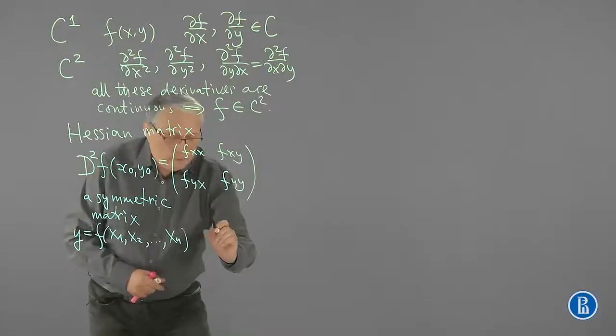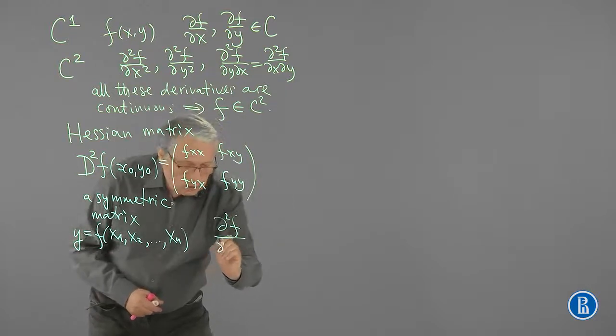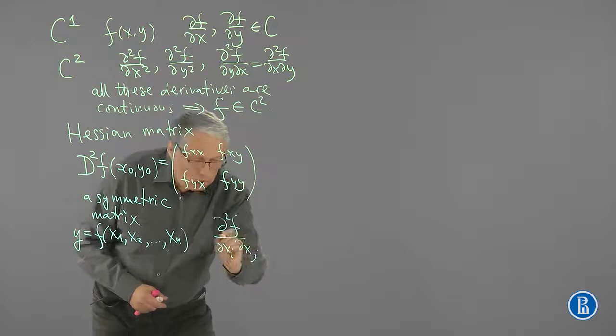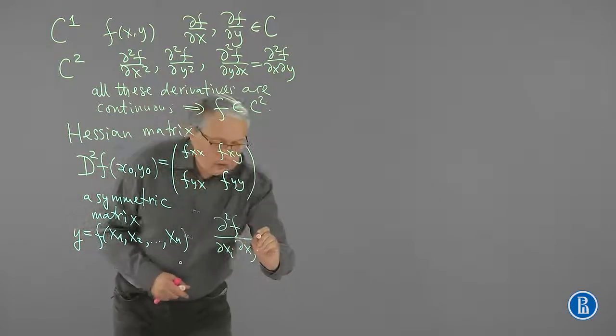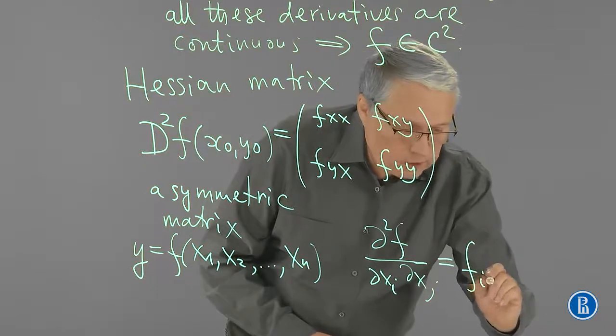Now, if we differentiate twice with respect to xj and xi, then we can use a brief notation f with subscripts.